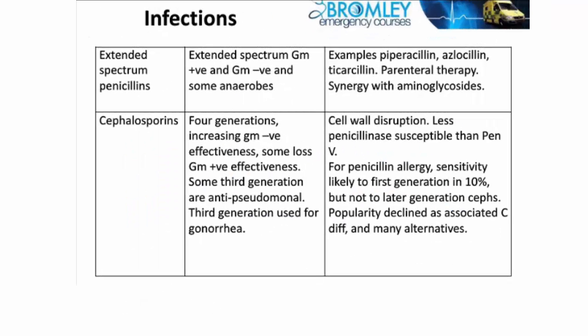Piperacillin is one of the extended spectrum penicillins. There are others — azlocillin, mezlocillin, etc. — and they have a much wider spectrum against gram positive and gram negative organisms, and also some anaerobes. They also have a synergistic effect with aminoglycosides. So piperacillin and gentamicin is a powerful combination against many gram negative organisms, also having some anaerobic cover, making it very useful for sepsis that arises from intestinal organisms in particular.